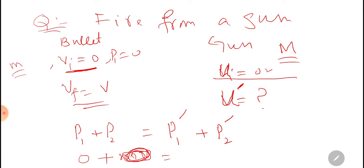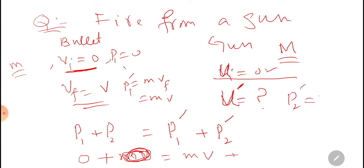Initial momentum of the gun is zero because velocity is zero. Final momentum of the bullet equals mvf, which equals mv (since vf equals v). Momentum of the gun equals M·uf, or just write u prime.